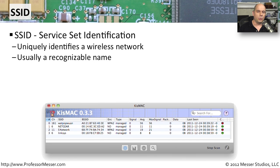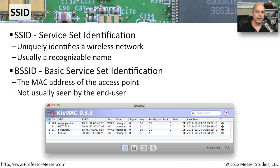Another configuration option for your wireless network is the SSID — Service Set Identification — which identifies your wireless network. When someone opens a list of available wireless networks, this is the name that appears. You typically make it a recognizable name so people know which network to join. You may also see a BSSID — Basic Service Set Identification — which refers to the MAC address of the access point itself. This is not normally seen by end users and doesn't require configuration changes.